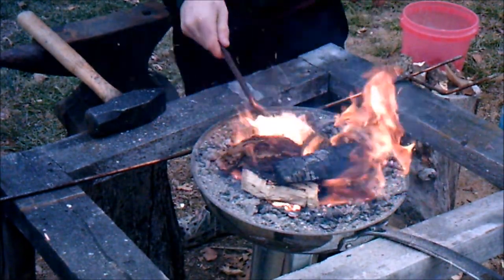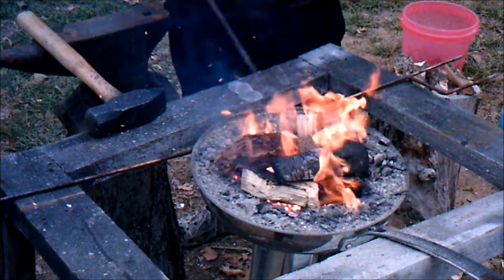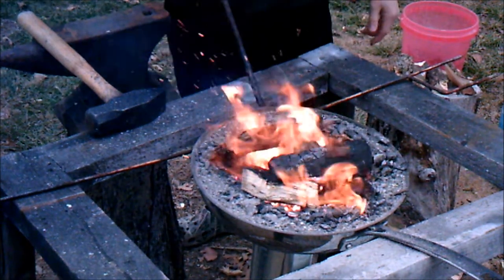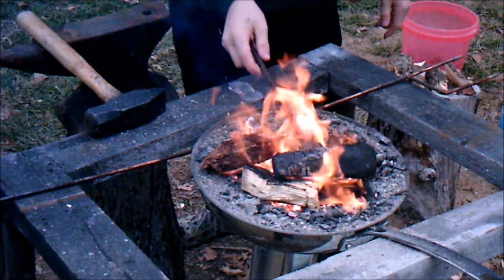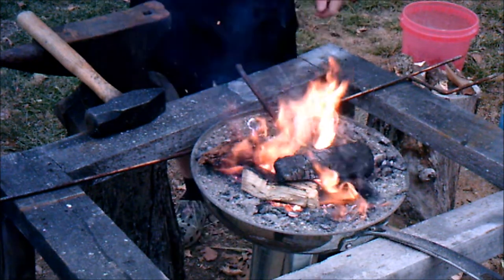All right guys, today we're gonna be making a pretty cool back scratcher out of some rebar. The first thing we're gonna do is forge out the claw. At the moment I'm out of coal so we're just gonna use some firewood.